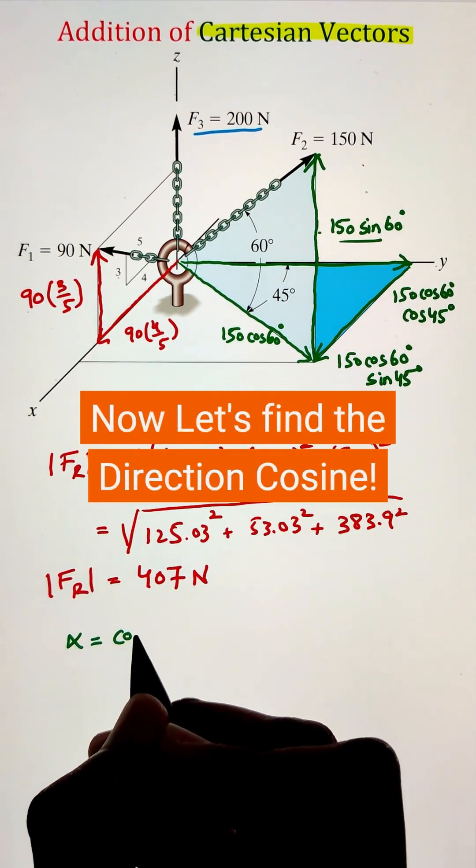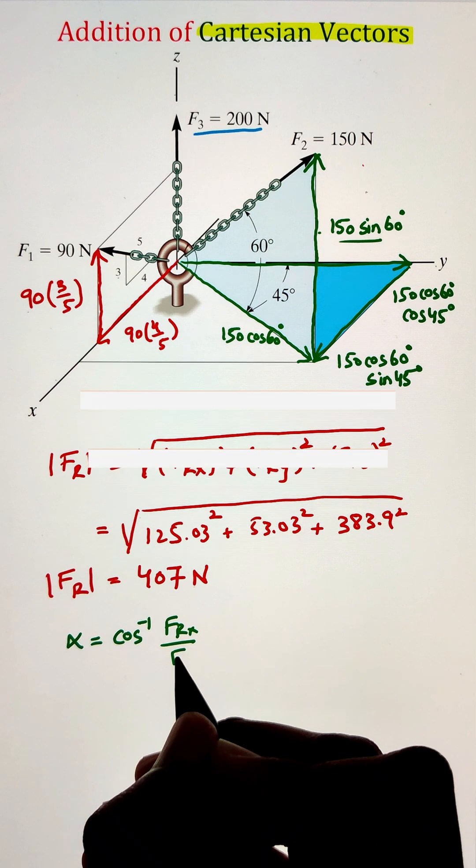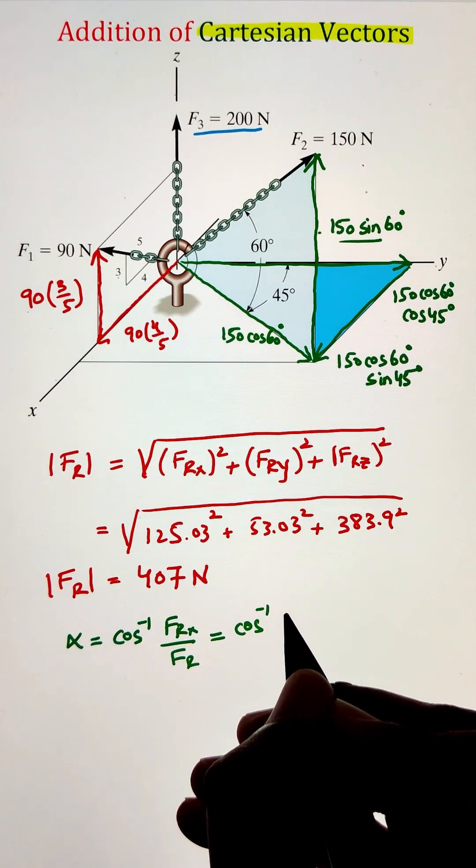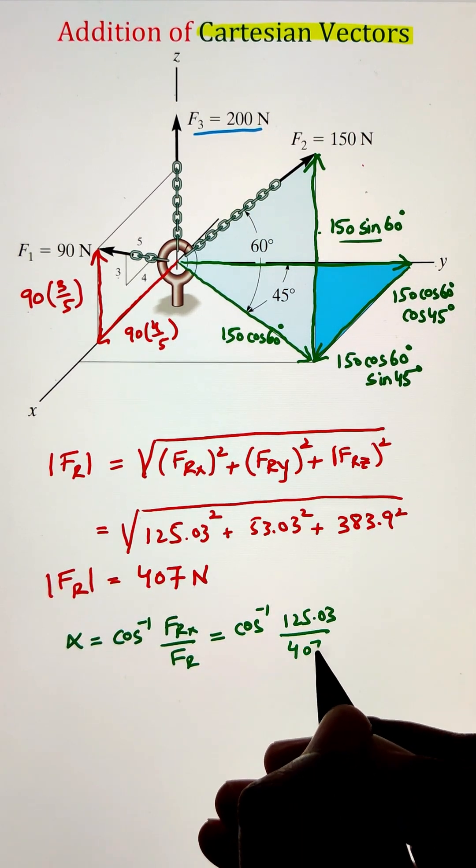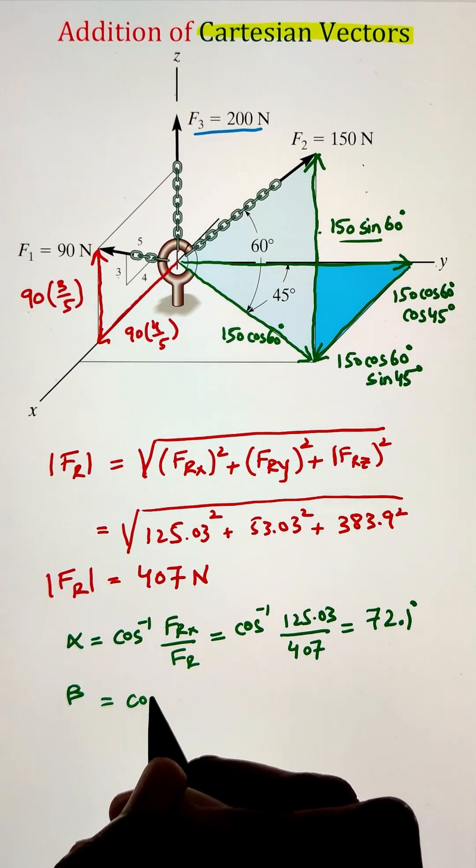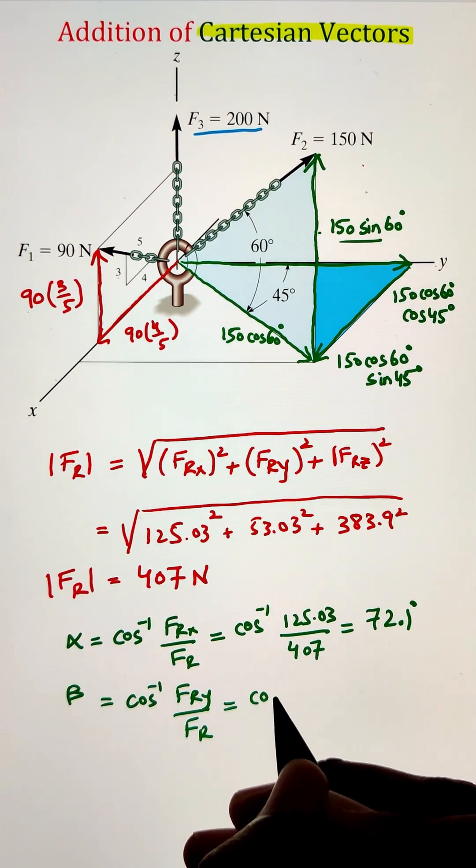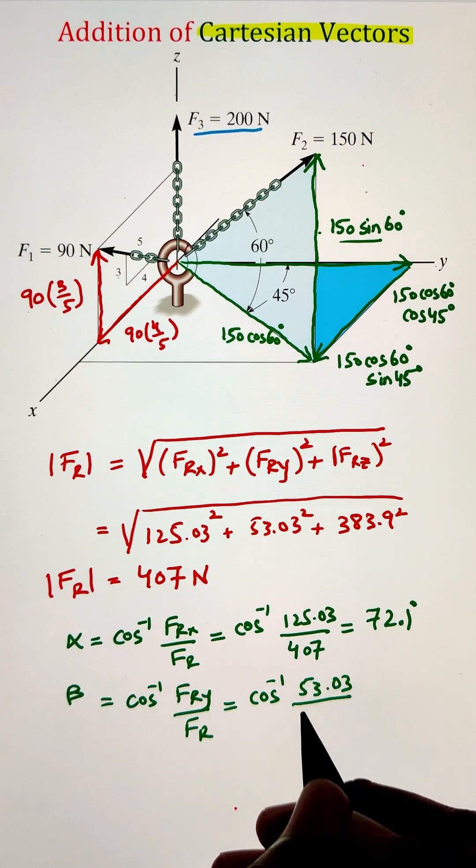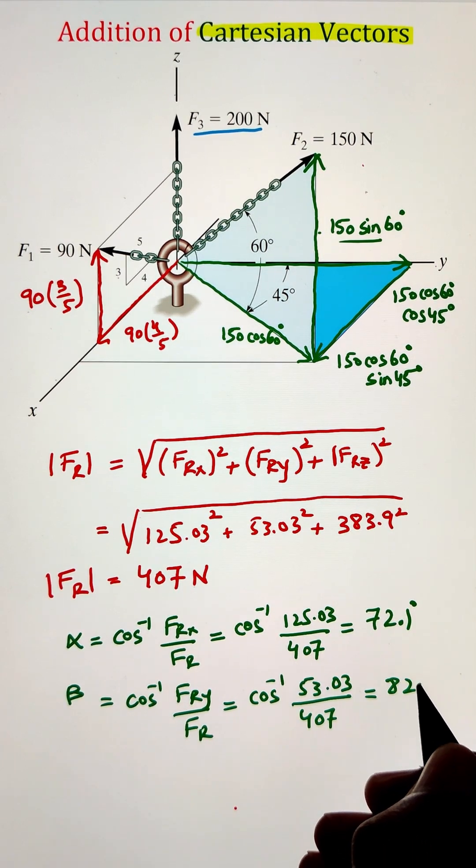Now, for the direction cosines, it is given as cos inverse of the X component of resultant force divided by the magnitude of the resultant force. Taking cos inverse of that ratio, gives us our alpha value of 72.1. This is the angle this force is making with the X axis.